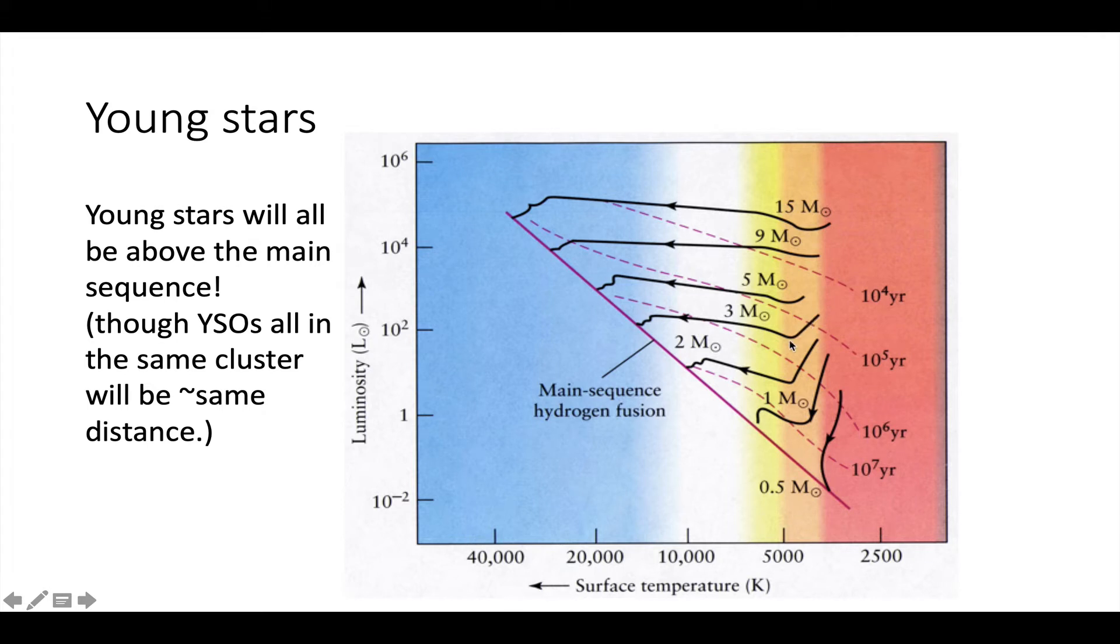A 15 solar mass star will pretty much move straight left before igniting hydrogen and landing on the main sequence. By the time you get to three solar masses, you get a little bit more of a dip before it goes left. And by the time you get to one solar mass, it's mostly vertical and then goes left and then alights on the main sequence.